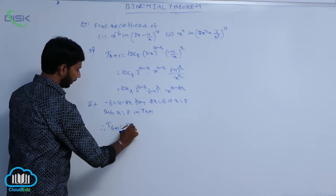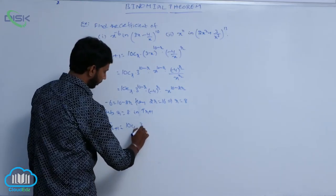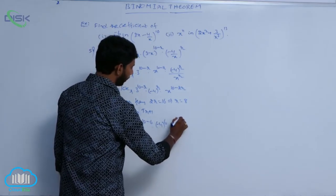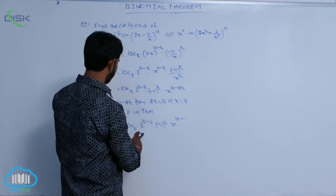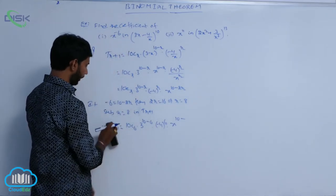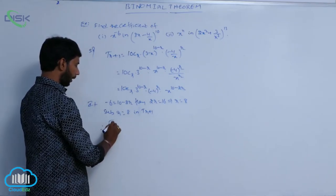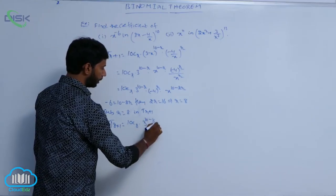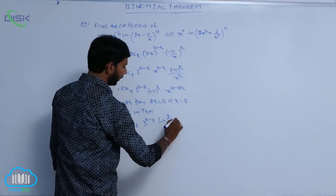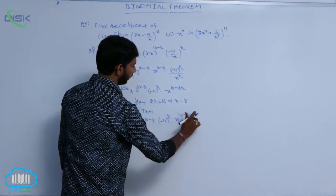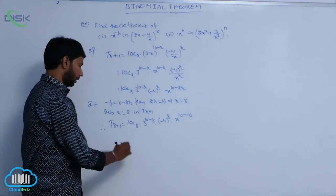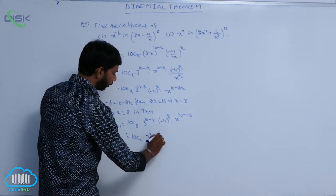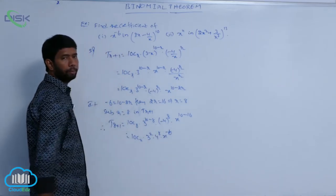Substituting r = 8 into T(r+1): T(8+1) = T9 = 10C8 into 3 power (10 minus 8) into (minus 4) whole power 8 into x power (10 minus 16). That is 10C8 = 10C2 into 3 squared into 4 power 8 into x power minus 6.